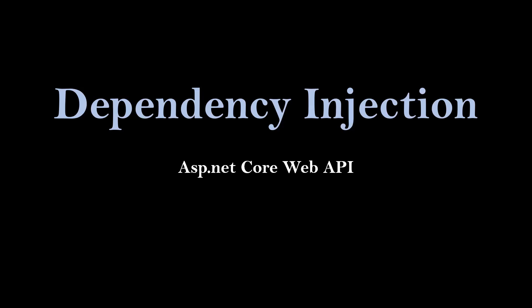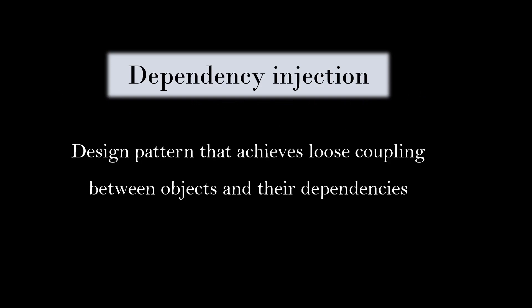In this video, we are going to discuss one of the important features of ASP.NET Core, that is dependency injection. Dependency injection is a design pattern that achieves loose coupling between objects and their dependencies. Design patterns are proven solutions to existing problems, and this particular design pattern solves the problem of tight coupling.